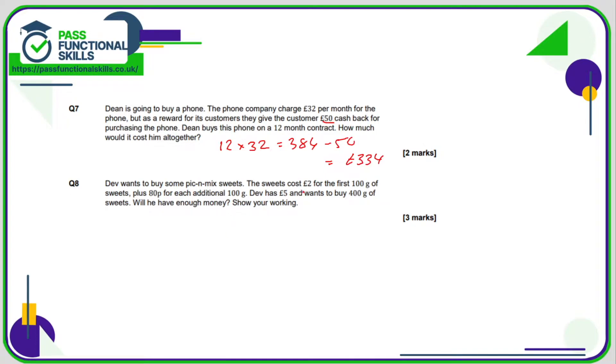Question number 8. It's £2 for the first 100 grams and then 80p for each additional 100 grams. So he wants to buy 400 grams, so the first 100 grams is going to be £2.00 and then he's got 3 lots of 100 grams at 80p. So that's going to be 3 times 80 and 3 80s comes to £2.40. So in total the pick and mix will cost him 2 plus £2.40 which is £4.40. He's got £8, so yes, he will have enough money. In fact, he'll have an extra £3.60p.